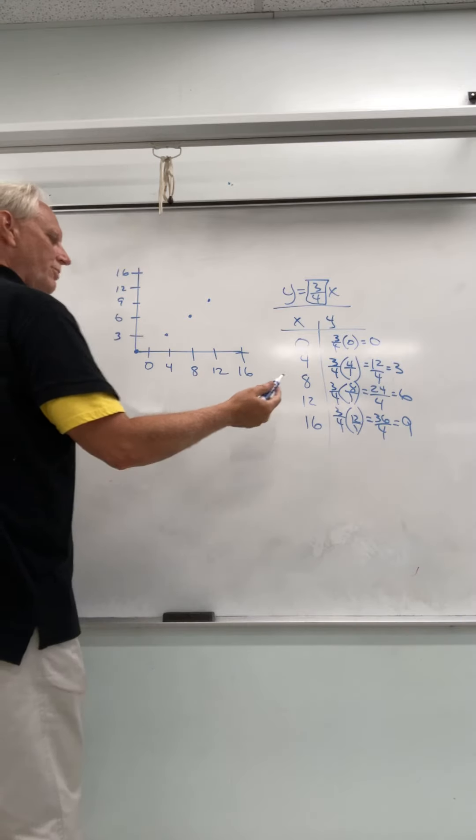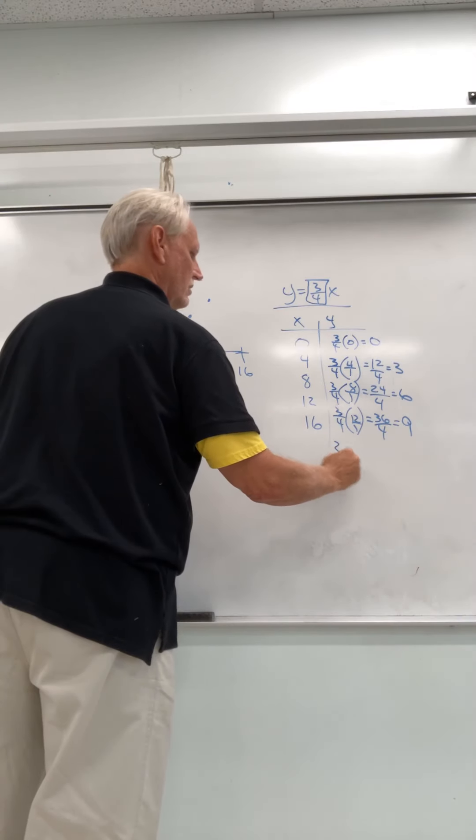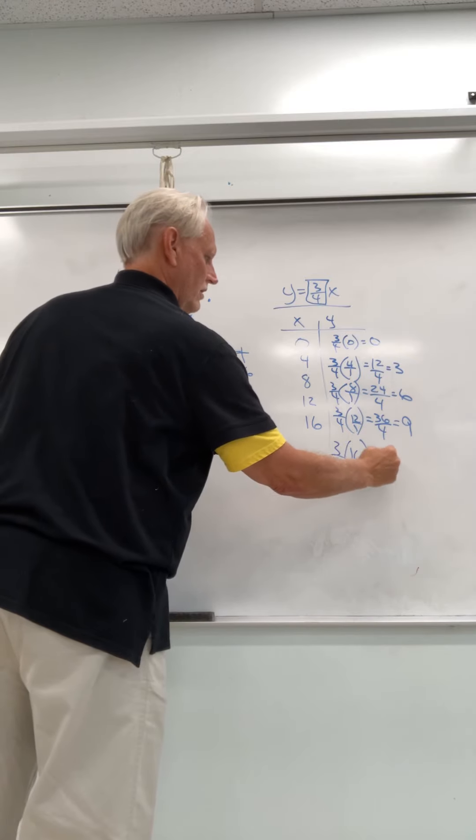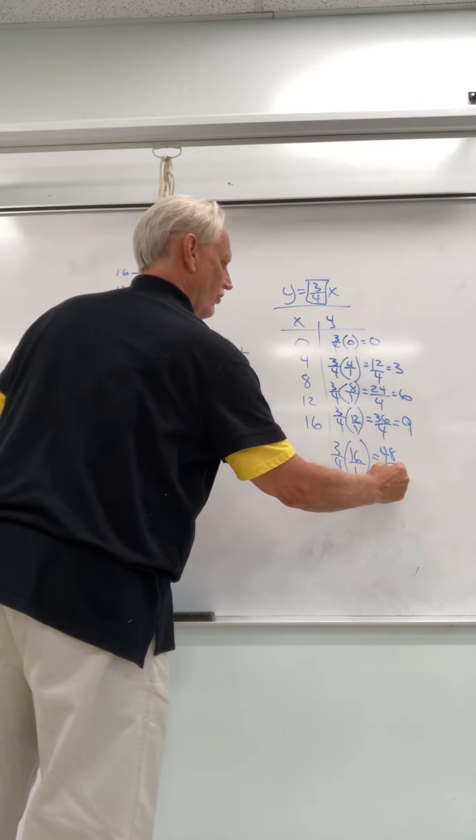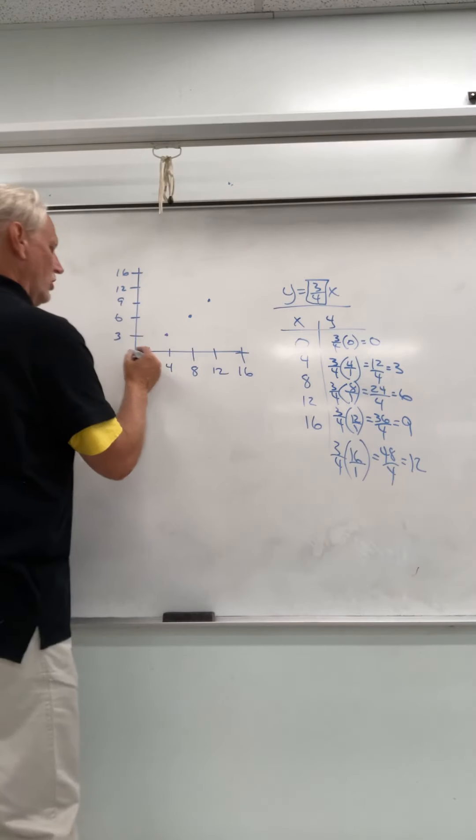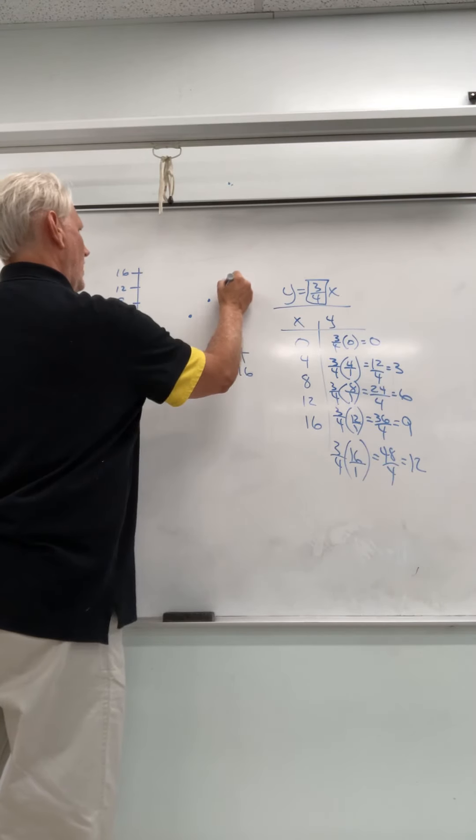But then my last point is 3 fourths times 16 over 1. That'll give you 48 over 4, which simplifies to 12. So we go over 16, up 12.